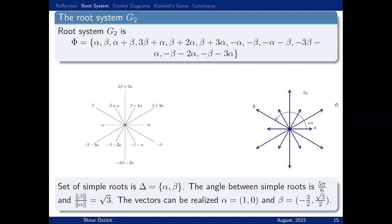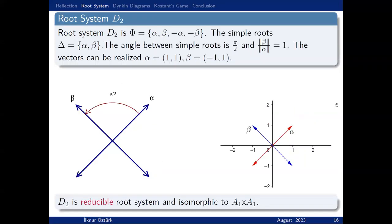This is G2. G2 is special because we cannot generalize to G_n—this is just G2. These are the vectors. In that case, the angle between them is 5π/6, and the ratio of their lengths is √3. Similarly, you can choose appropriate vectors and realize G2 in R².